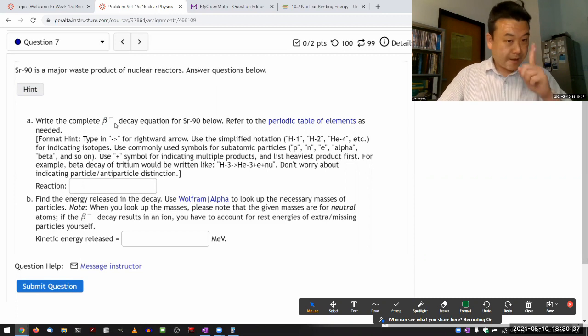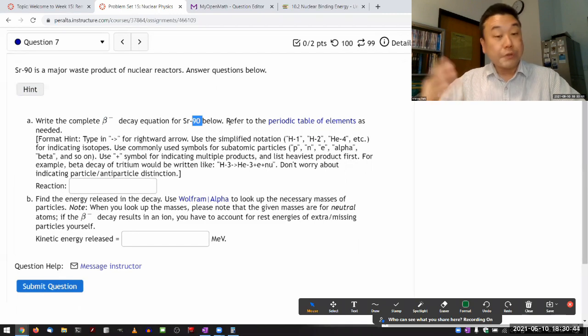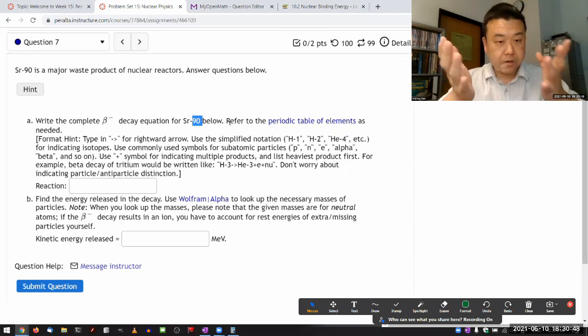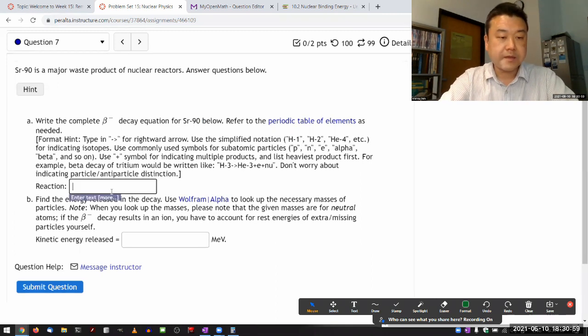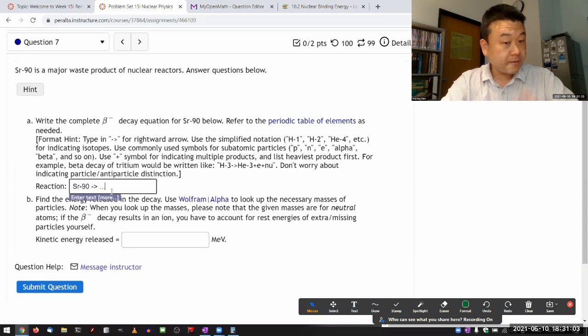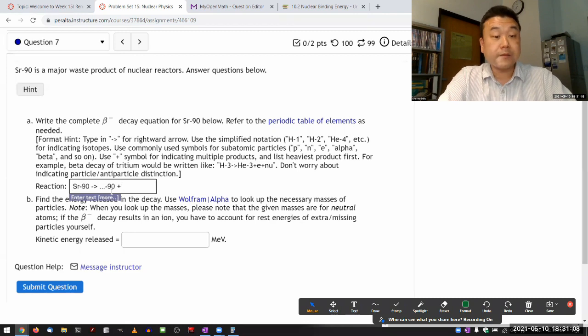With the beta minus decay that emits an electron, the mass number will stay the same. One of the nucleons turns into another nucleon. The mass number still stays at 90, but it'll change a little. And then as it changes, we'll have token. So SR-90 will turn into something that has a still mass number of 90 plus, and one of the particles that are emitted in beta minus decay is electron.